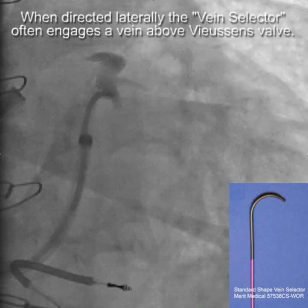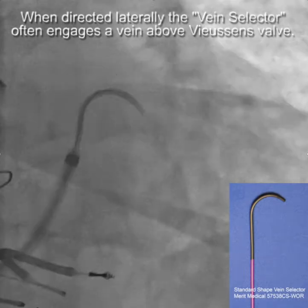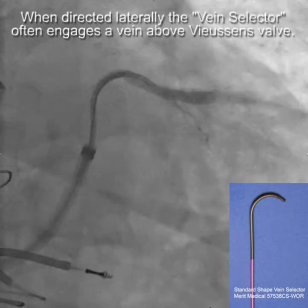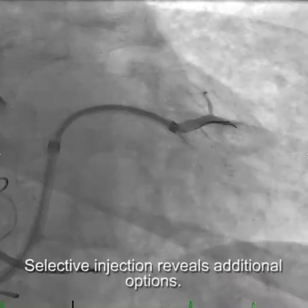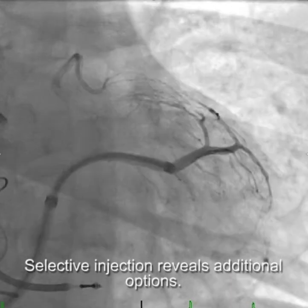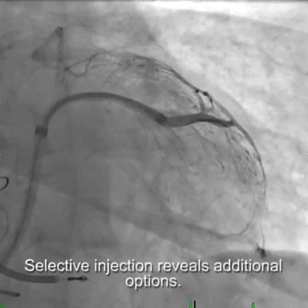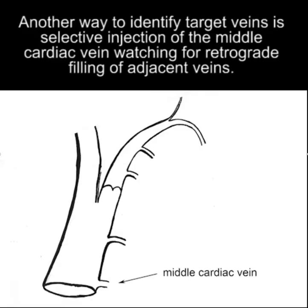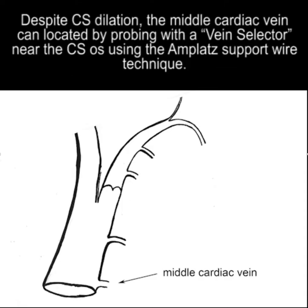When you direct laterally, the vein selector often engages another vein above Vucin's valve. Selective injection will reveal additional implant options. Another way to identify target veins is selective injection of the middle cardiac vein while watching for retrograde filling of adjacent veins.